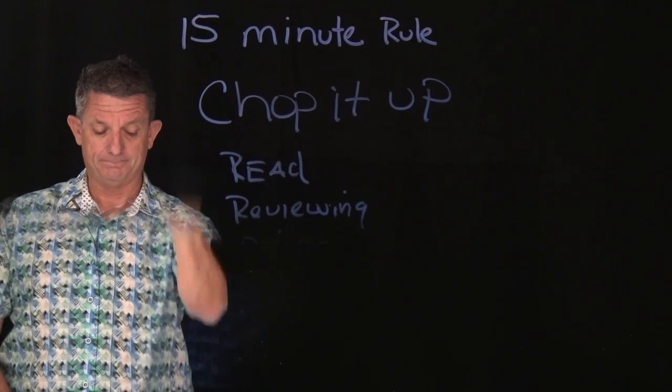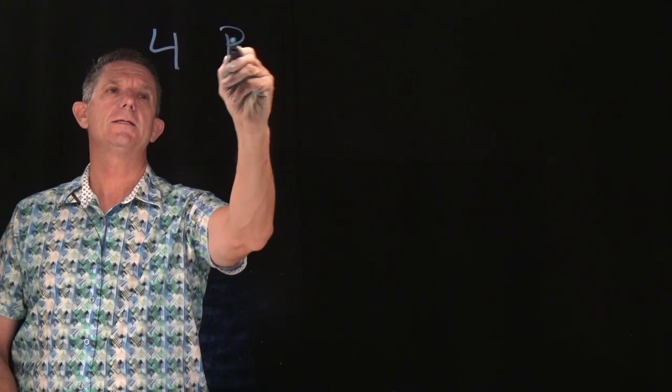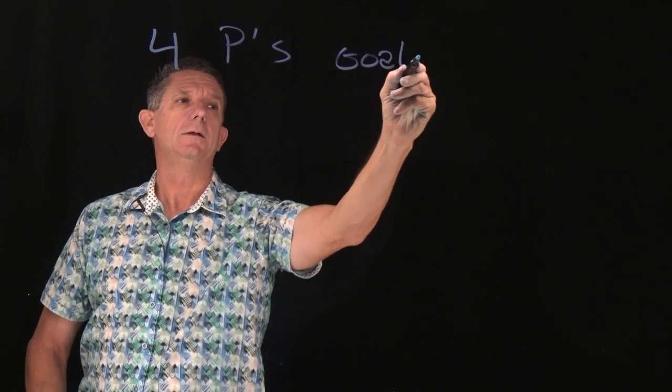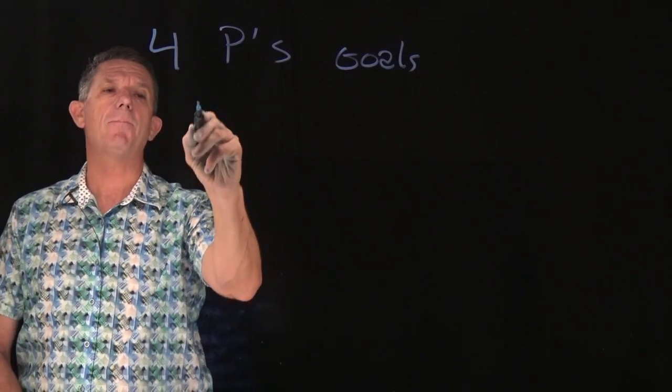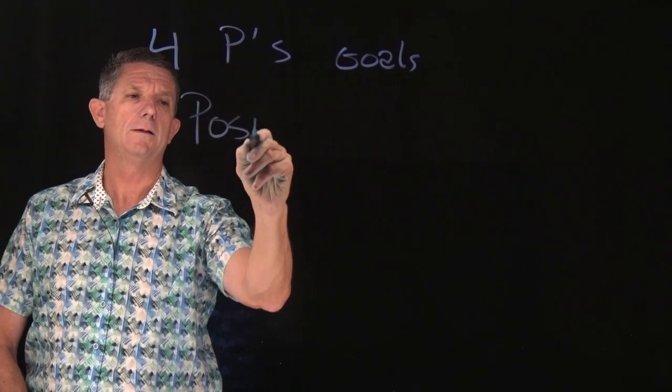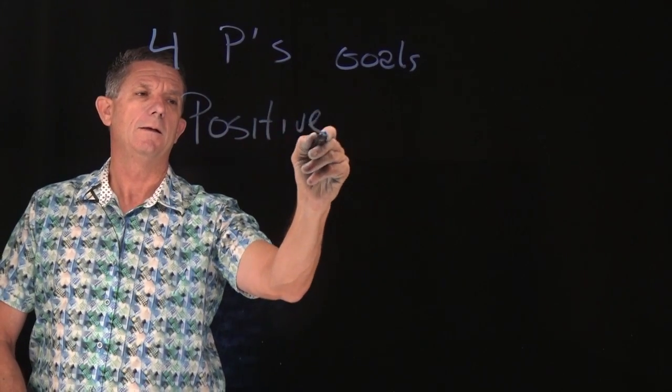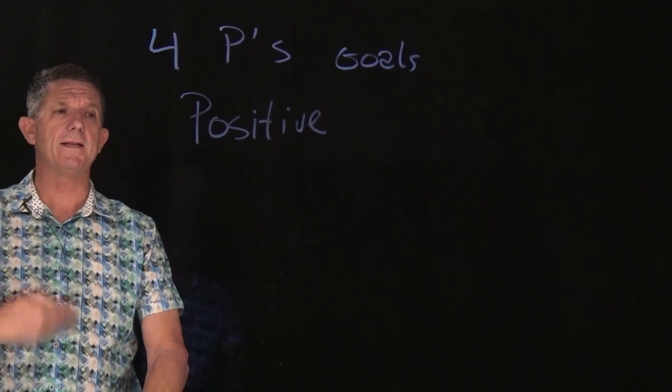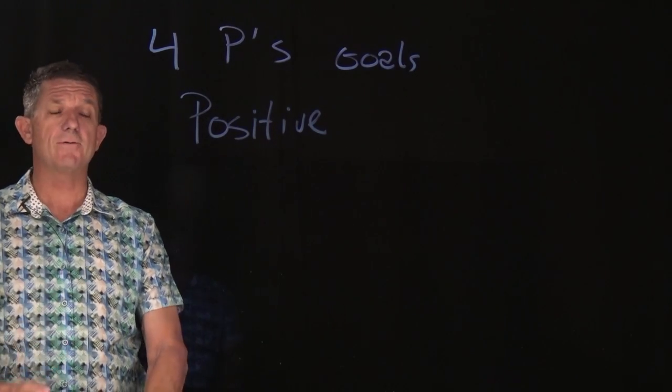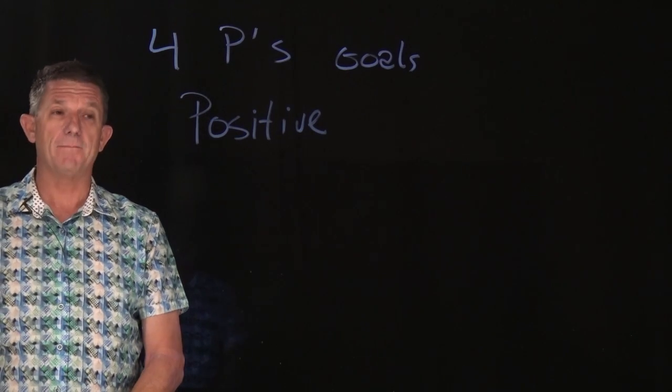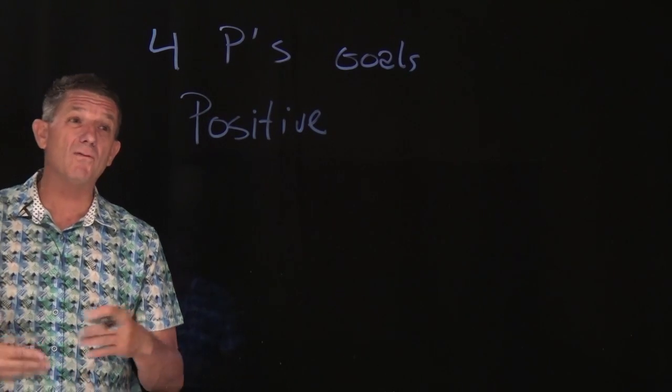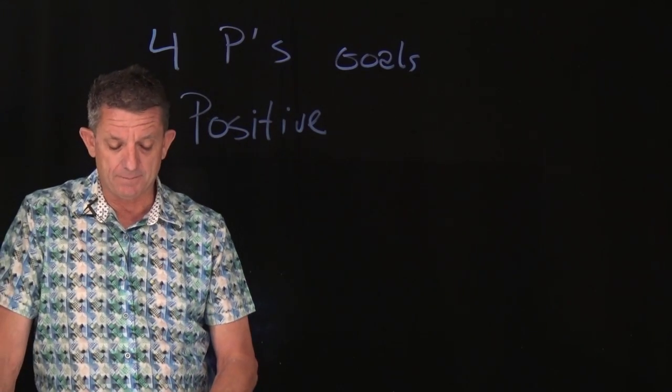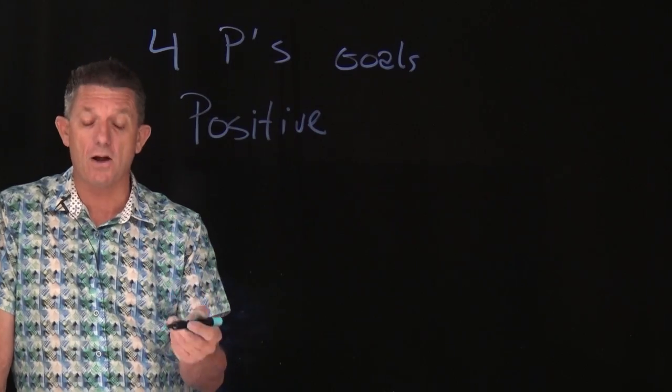Let's talk about the four Ps, four Ps of goal setting, of goals. First one, they must be positive. A positive goal. I am going to run a mile in nine minutes. That's a positive goal, okay? I'm not, well, I'm going to try, or maybe I'll run in nine. It must be, I'm going to run in nine minutes. So it has to be positive and accomplishable.